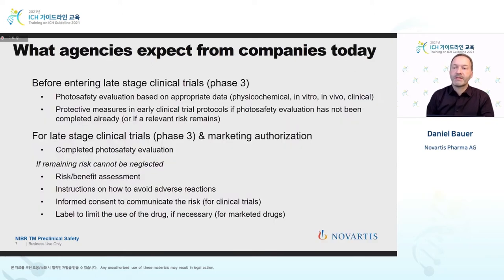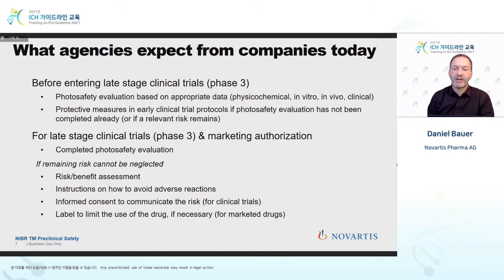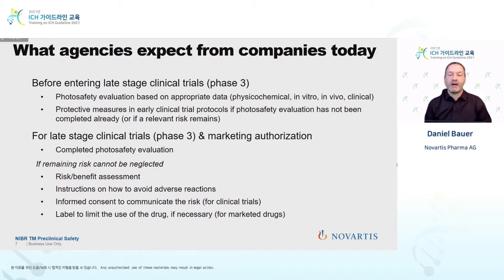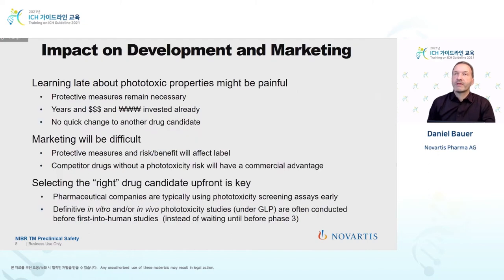What do agencies expect from companies? A very high-level statement based on M3 and S10: before entering phase three clinical trials, there must be some form of photosafety evaluation. If this has not been completed, there must be protective measures in clinical trials. For phase three or marketing authorization, this evaluation needs to be completed with a final statement. If the final statement concludes that the risk cannot be neglected, you have to do a risk-benefit assessment including full toxicity, and you have to have instructions and communicate the risk. This has an impact on development and marketing.